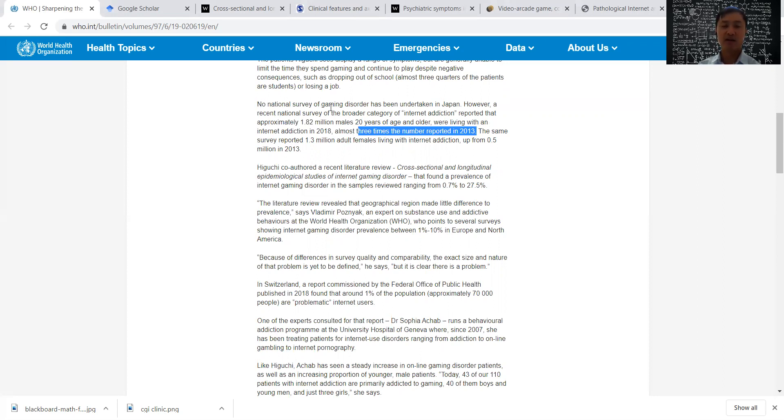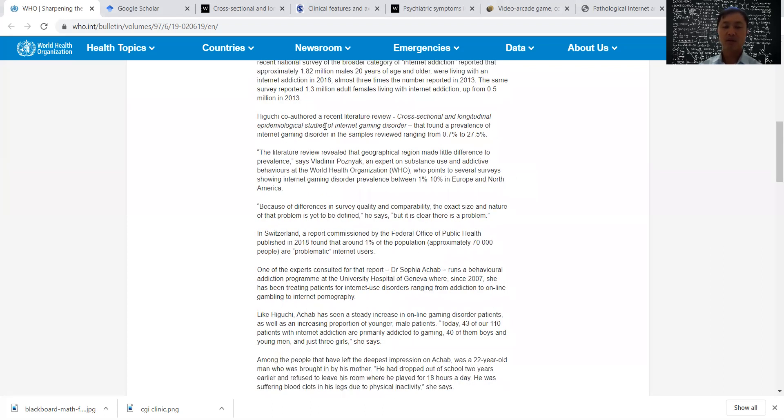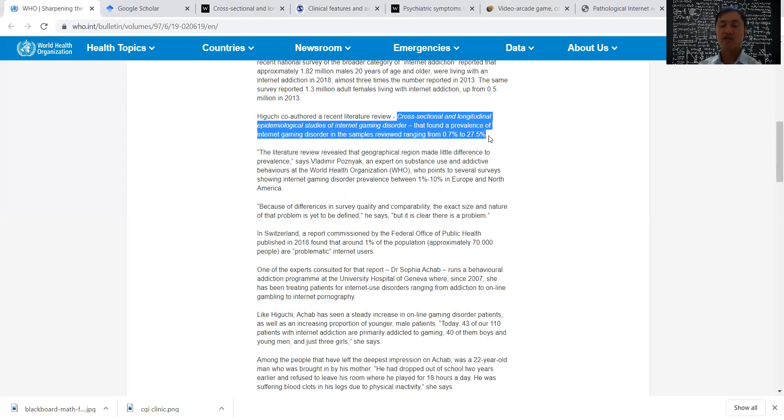So the key thing about this paragraph here is that there is a difference between gaming disorder, also known as video game addiction and internet addiction. The same survey reported that 1.3 million adult females living with internet addiction up from 0.5 million in 2013. So in a space of five years, it's gone from half a million to almost three times that 1.3 million females with internet addiction. Now, the reason why I wanted to talk about this article was that Higuchi co-authored a recent literature review called Cross-sectional and Longitudinal Epidemiological Studies of Internet Gaming Disorder and found that the prevalence of internet gaming disorder in the samples reviewed ranged from 0.7% to 27.5%.